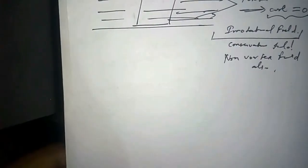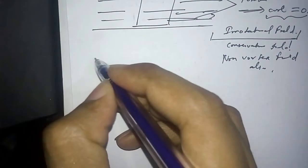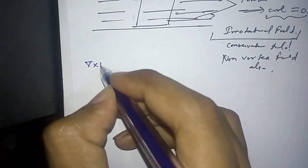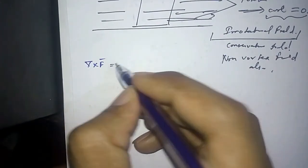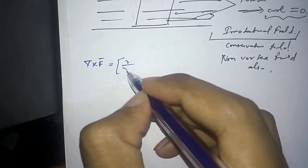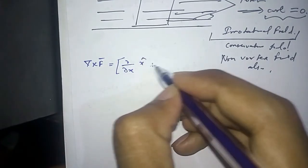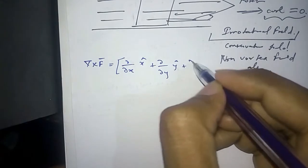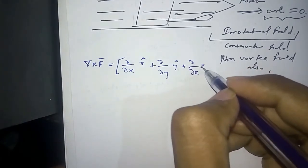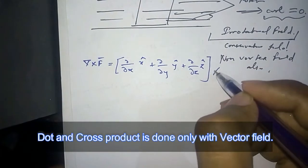Here we have to do the cross product of the differential operator, which is del: del by del x x cap, del by del y y cap, del by del z z cap, cross a vector field.